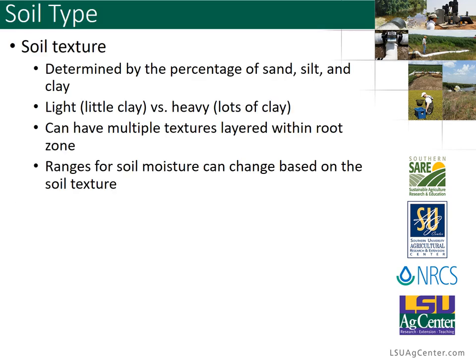First, we're going to talk about the soil type. The soil is defined by two terms: soil texture and soil structure. When we talk about soil texture, we are talking about the percentage of sand, silt, and clay that makes up that soil. When you hear people talk about a light soil or a heavy soil, that's usually referring to the amount of clay within that soil. A heavier soil is going to have a high clay content, and acts more mucky and heavier than something with sand, which is considered a very light soil. You can have anything in between those two ranges.